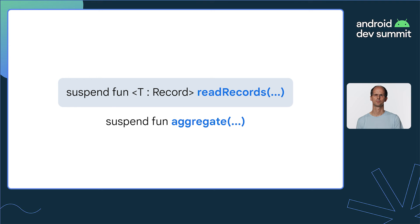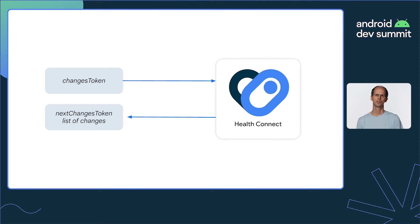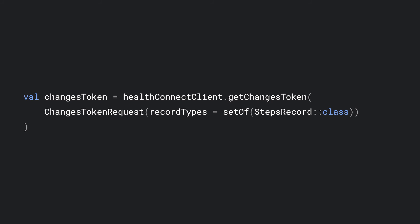Let's look at this concept. When you want to retrieve the changes to step count data, you supply a changes token and receive a list of changes that have happened since that token was made, in addition to a new changes token to use next time. So how do you get hold of your first token? Use getChangesToken to obtain a token, for example for steps, as shown here.